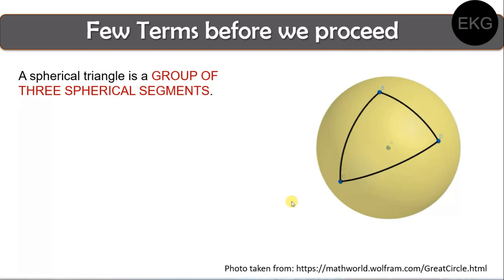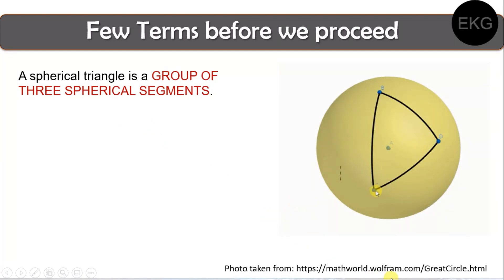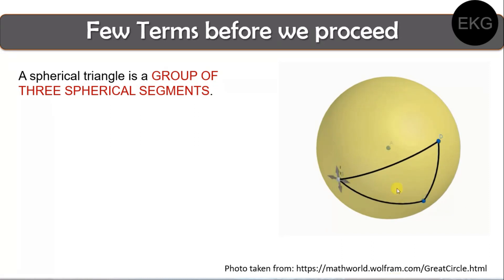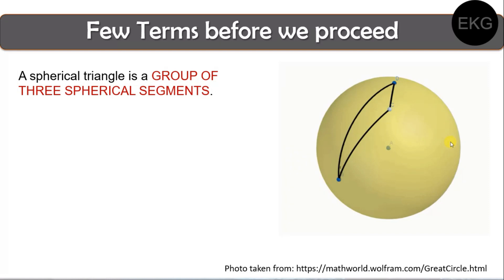So what is the form of a spherical triangle, and how does it differ from the triangles we have already discussed — right triangles as well as oblique triangles? We have a video here. Try to look at the various forms that a spherical triangle takes. Those are all forms of spherical triangles.